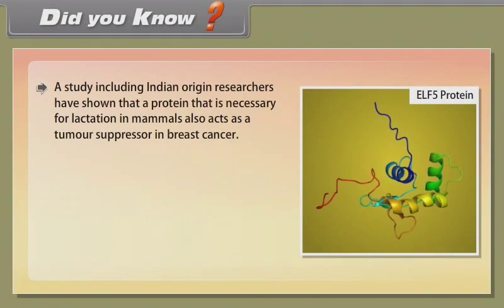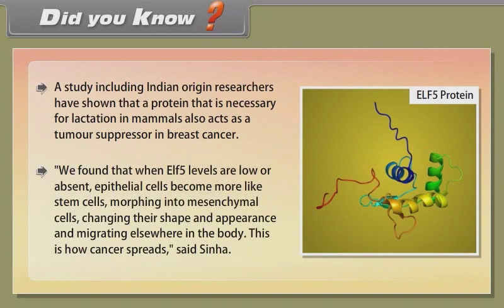Did you know? A study including Indian-origin researchers has shown that a protein necessary for lactation in mammals also acts as a tumor suppressor in breast cancer. When ELF5 levels are low or absent, epithelial cells become more like stem cells, morphing into mesenchymal cells, changing their shape and appearance, and migrating elsewhere in the body. This is how cancer spreads, said Sinha.